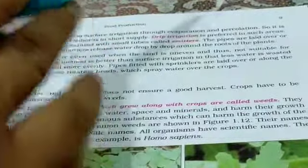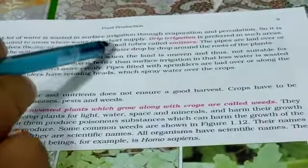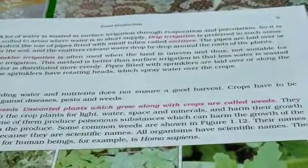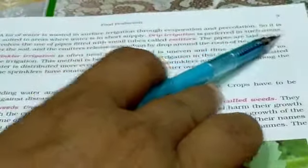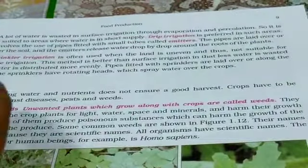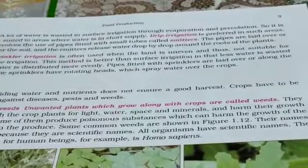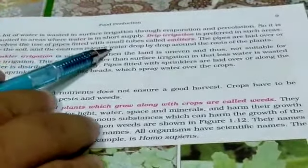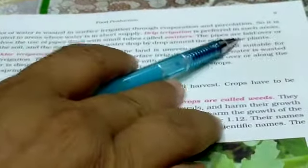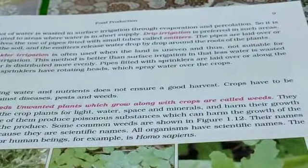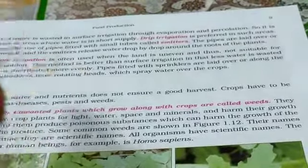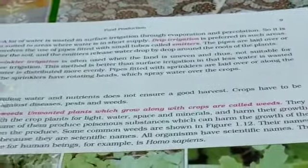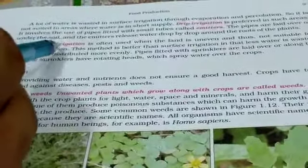Isliye jahan par paani ki bahut zyada kami hai, wahan par hum log surface irrigation ka use nahi karte — balki drip irrigation ka use prefer karte hain. It involves the use of pipes fitted with small tubes called emitters. The pipes are laid over or under the soil, and the emitters release water drop by drop around the roots of the plant.